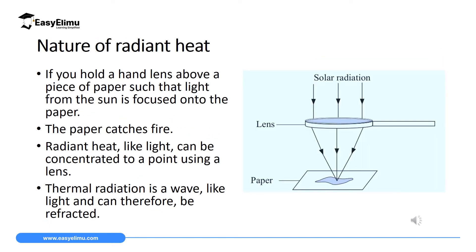Radiant heat, just like light, can be concentrated to a point using a hand lens. If you have a hand lens and there's radiant heat, you can concentrate it to a common point. To investigate this, you take a piece of paper — as you can see on the screen — then take a hand lens and focus the rays from the sun through it. After some time, the rays will be concentrated at one point on the paper, and the paper will catch fire. This means thermal radiation is a wave just like light, and those radiations can be refracted — meaning their direction changes and they converge to one point.